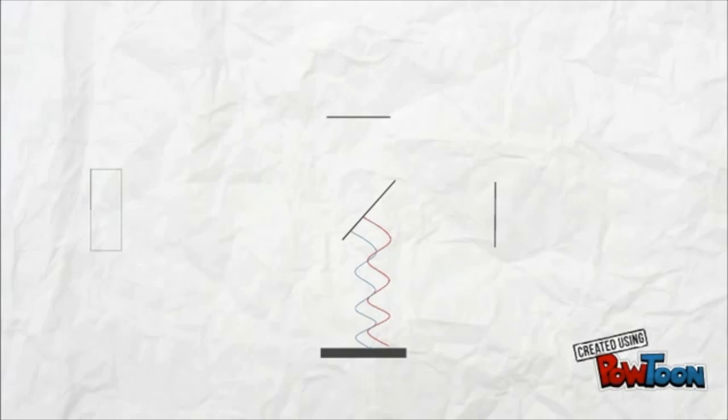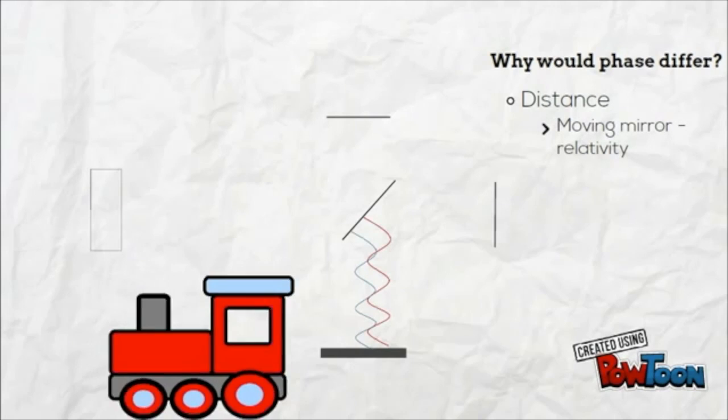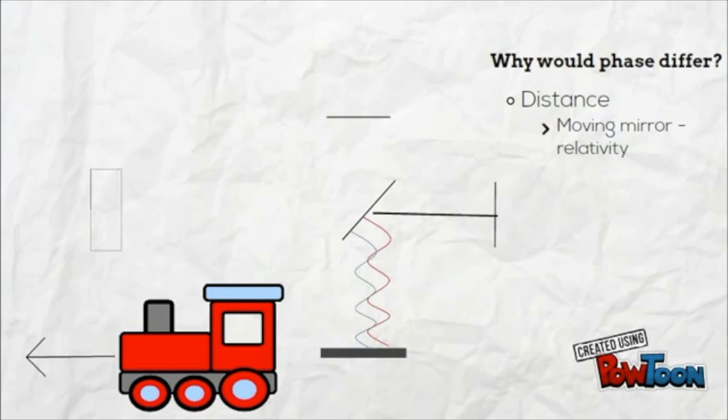Let's briefly look at what can cause a phase difference. Firstly, the difference between the mirrors could differ. If, for instance, the apparatus is on a train, the mirrors will move relative to each other, and this can be used to show that speed of light is the same for all observers.